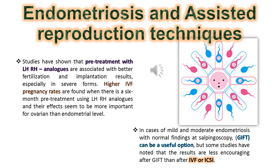Studies have shown that pretreatment with LHRH analogs is associated with better fertilization and implantation results, especially in severe forms. Higher IVF pregnancy rates are found with 6-month pre-treatment using LHRH analogs, and their effects seem more important at the ovarian than endometrial level. In cases of mild and moderate endometriosis with normal findings at salpingoscopy, RIFT can be a useful option, though some studies note results are less encouraging after RIFT than after IVF or ICSI.